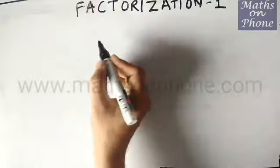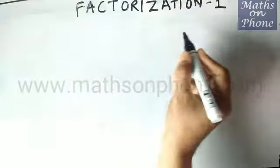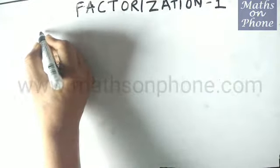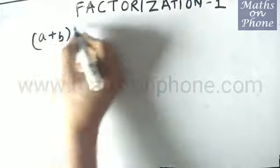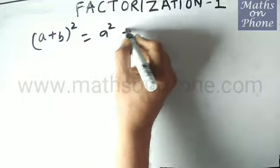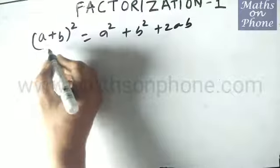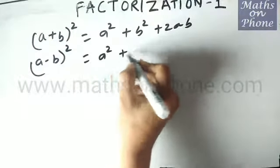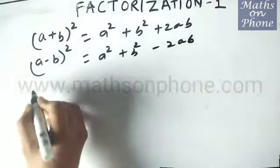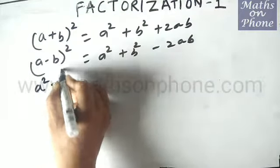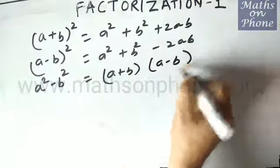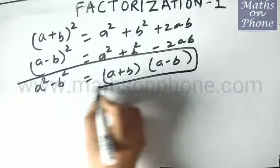Hello friends. Now we will see how to use factorization — how to solve factorization problems using the formula identities we have already learned. Just for recalling: (a + b)² = a² + b² + 2ab; (a - b)² = a² + b² - 2ab; and the very important identity a² - b² = (a + b)(a - b). That is the most important tool for factorization.